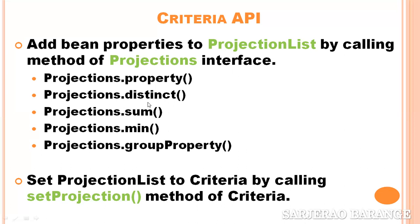By calling these methods of Projections, we will include the required items in the projection list. Once our projection list is prepared, the next step is — as written here — set the projection list to criteria by calling the setProjection method of criteria. By calling this setProjection method, we add the projection list we prepared to the criteria. This is how the select clause is written in criteria. That was the theoretical part.